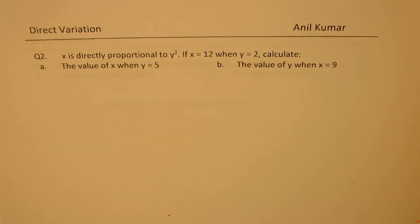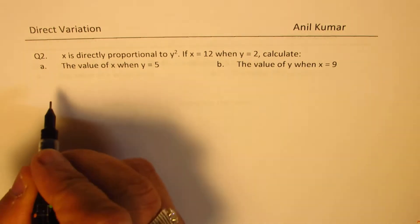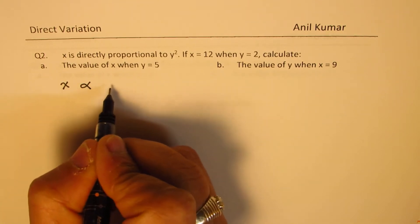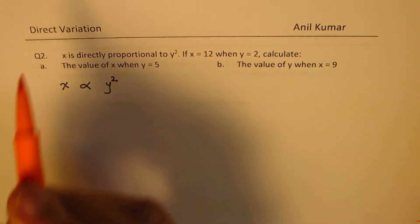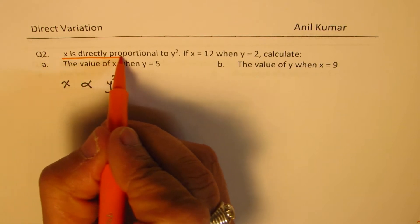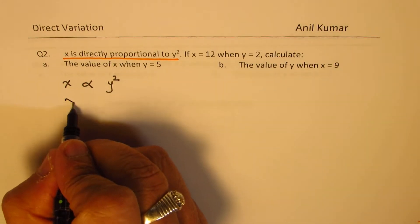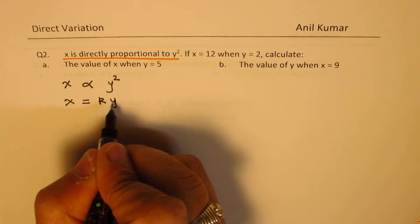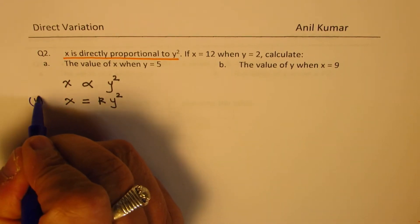Let us see how to solve this question. When I say that x is directly proportional to y square, this can be translated as x is proportional to y square. So that is how we translate the statement. Now proportionality sign can be written as an equal to sign and multiplied with a constant. So we get our equation, which is x equals to k times y square. We'll call this equation number one.